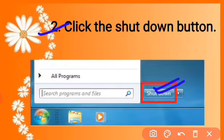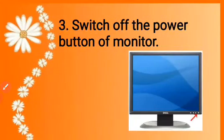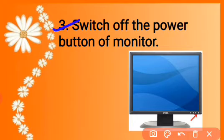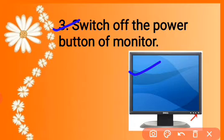The CPU will automatically switch off. The third step is to switch off the power button of your monitor. You can see the power button on the monitor and press it to turn it off.